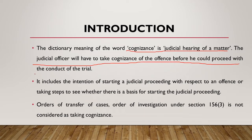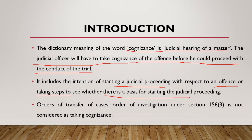The judicial officer will have to take cognizance of the offense before he can proceed with the conduct of the trial. It includes the intention of starting a judicial proceeding with respect to an offense, or taking steps to see whether there is a basis for starting the judicial proceeding or not. Usually it means application of mind — the judicial officer has to apply his mind to determine if there is a basis to start the judicial proceeding.